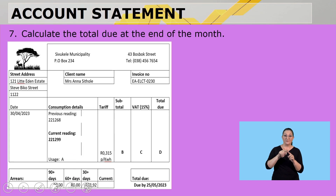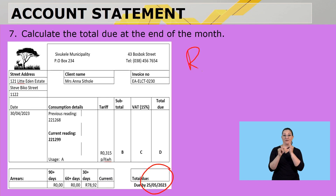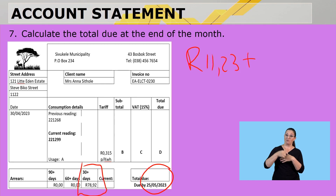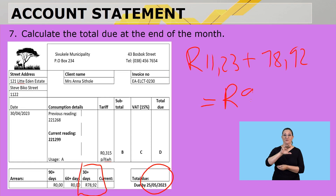Calculate the total due at the end of the month. The total due is going to be D, which is R11,23 for this month, plus the total due for the previous month of R78,92. And that gives you a total of R90,15.